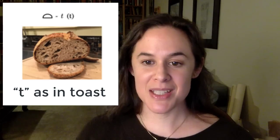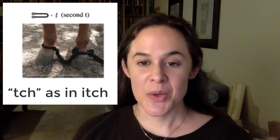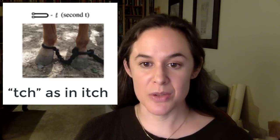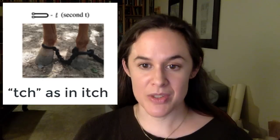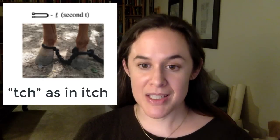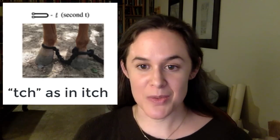We're starting to get close to the end. Our next hieroglyph is pronounced T as in 'toast,' and represents a loaf of bread with a flat bottom and a rounded top. After the bread loaf T — one of the most common single-consonant hieroglyphs — comes the second T, written in transliteration as a T with a line underneath it. It represents the sound CH as in 'itch.' The hieroglyphic sign represents a hobble or fetter of the kind used to bind the legs of animals.